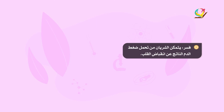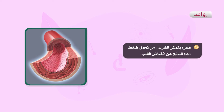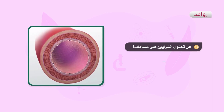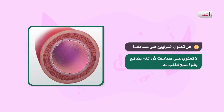يتمكن الشريان من تحمل ضغط الدم الناتج عن انقباض القلب لأنه يمتلك عضلة ملساء سميكة تتحمل ضغط الدم. أما الشرايين فلا تحتوي على صمامات لأن الدم يندفع بقوة ضغط القلب.